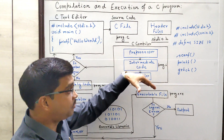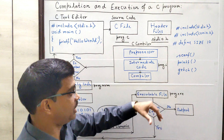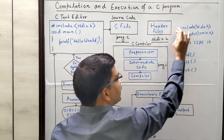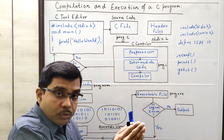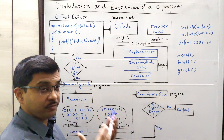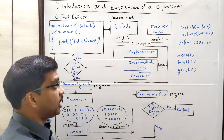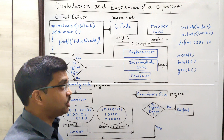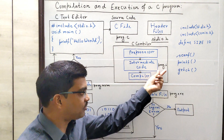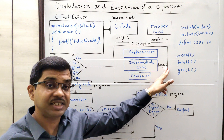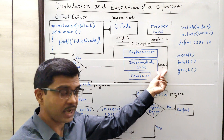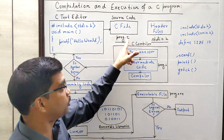So before compilation, before the compiler takes its action, all these preprocessing things will happen. The source code will be expanded — that means all the hash symbols will be removed. The source code saved earlier as program.c will now be expanded after preprocessing the entire code. Another file will be generated that is called the extended source code, also termed the intermediate source code. It will be saved with the extension .i, where I stands for intermediate. So now we have got another file called program.i after successful preprocessing of the source file program.c.